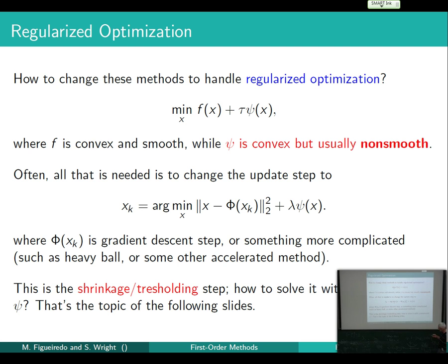This is where we left off. We talked about a bunch of first-order methods for minimizing a smooth F. Now I want to extend them to the case where we're adding on a regularizer — one that is usually convex but not smooth. The basic approach is to take a first-order step in F and then incorporate the regularization term explicitly.